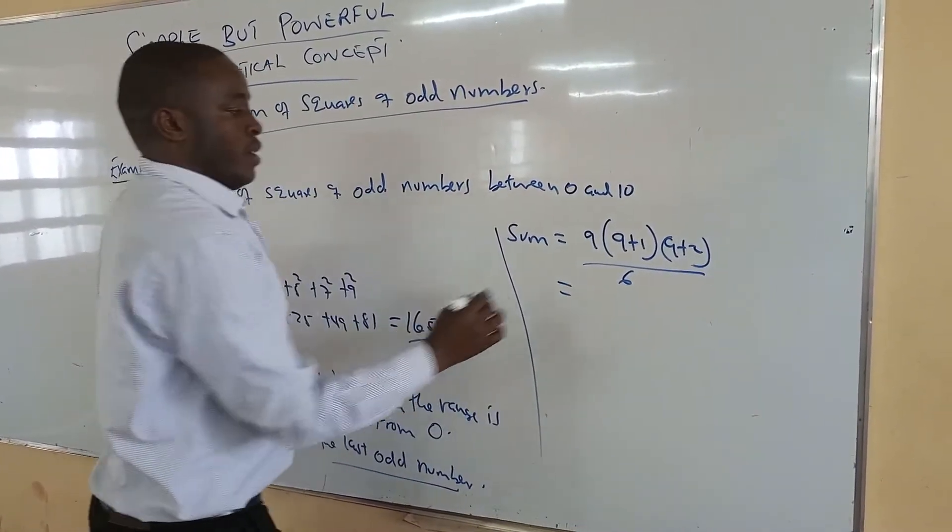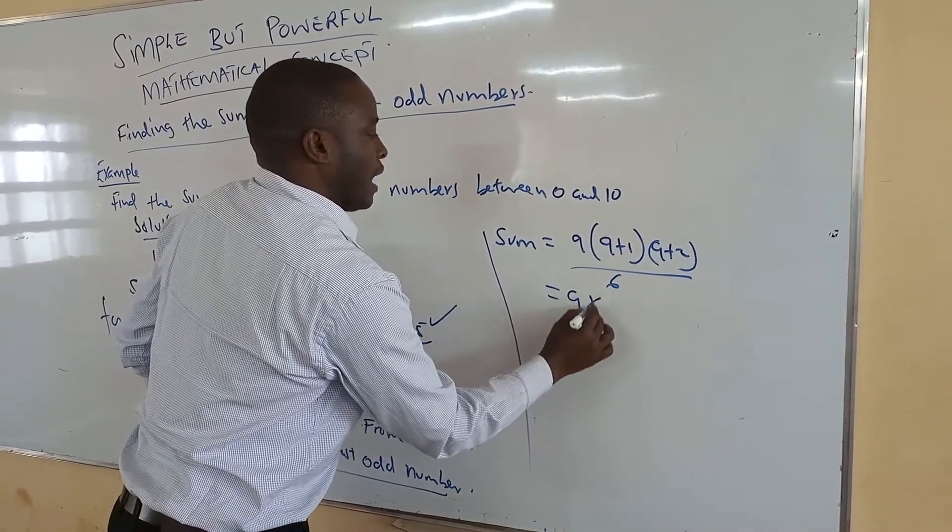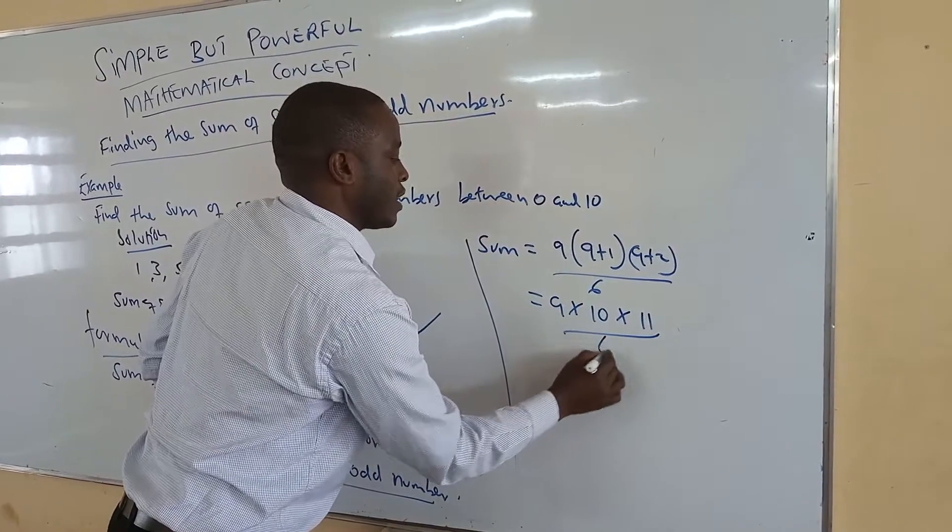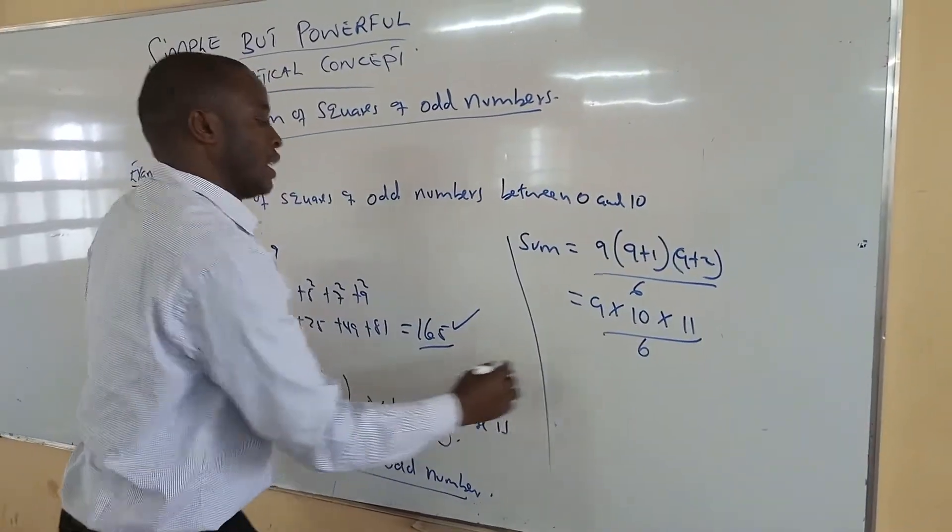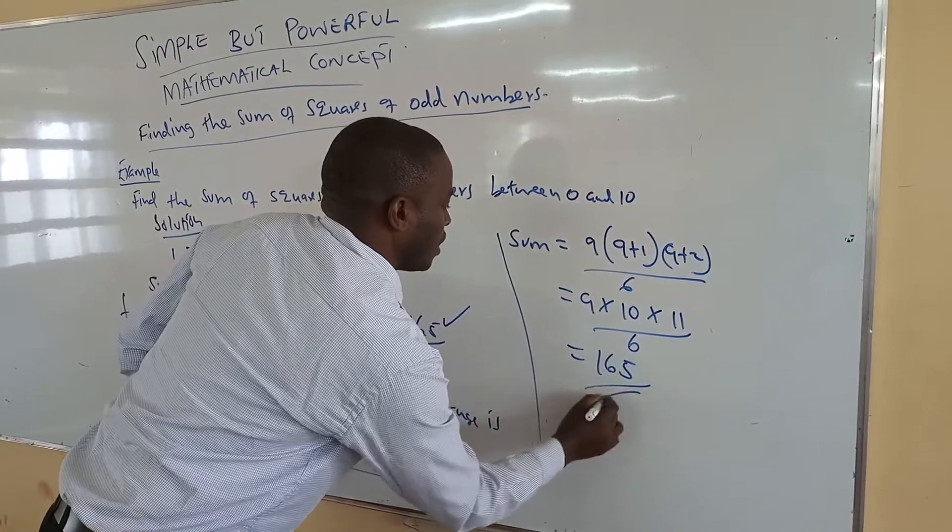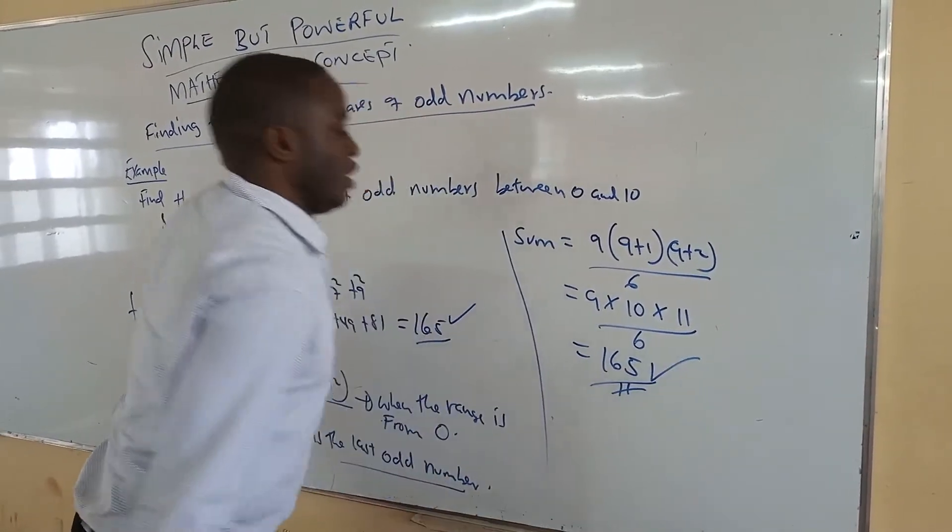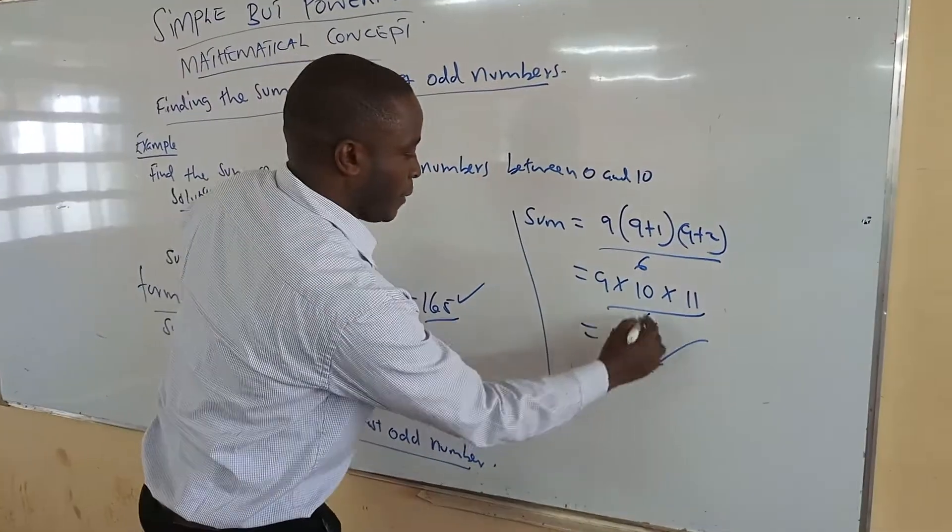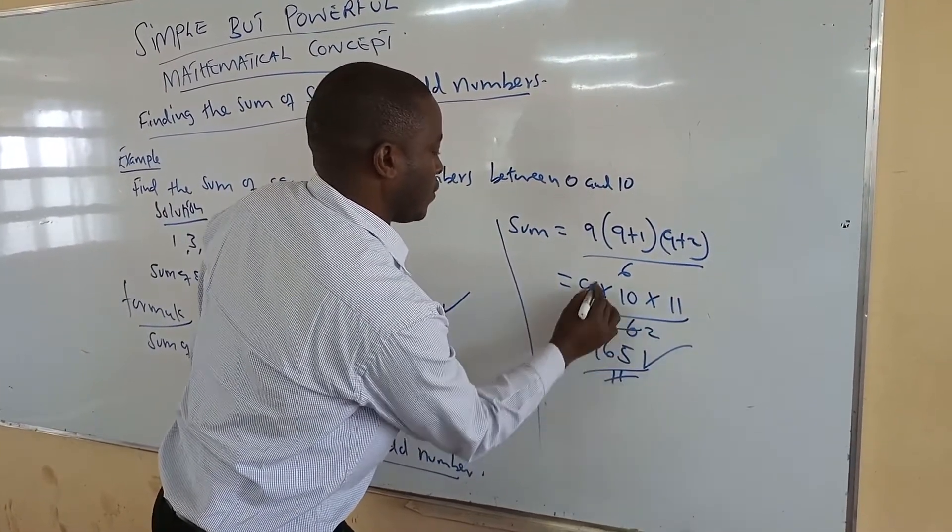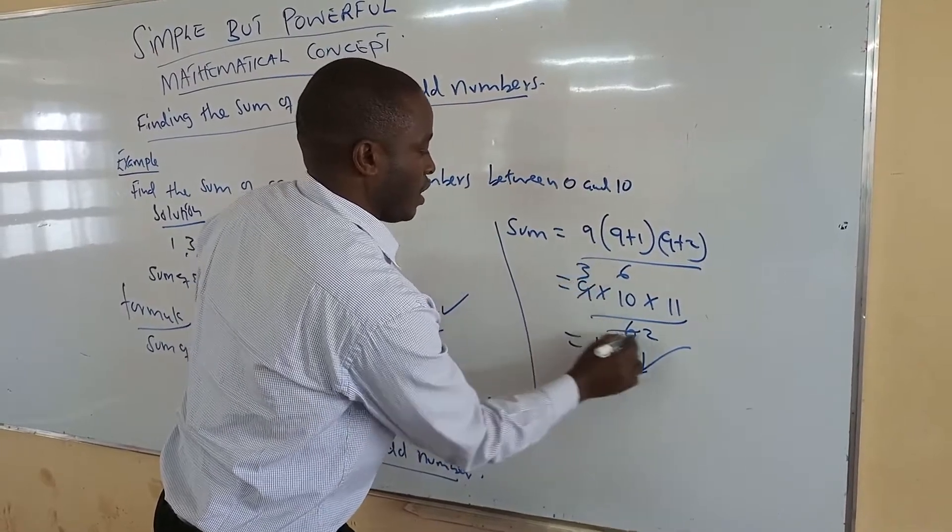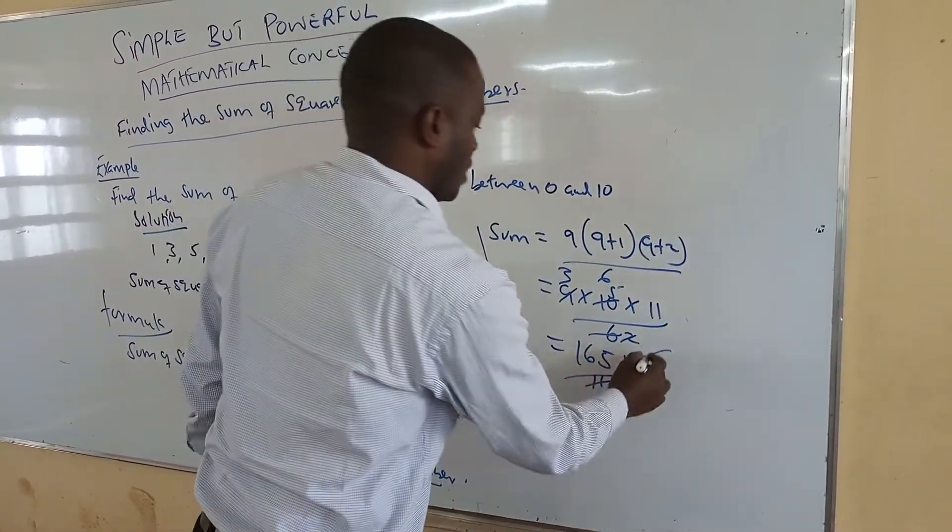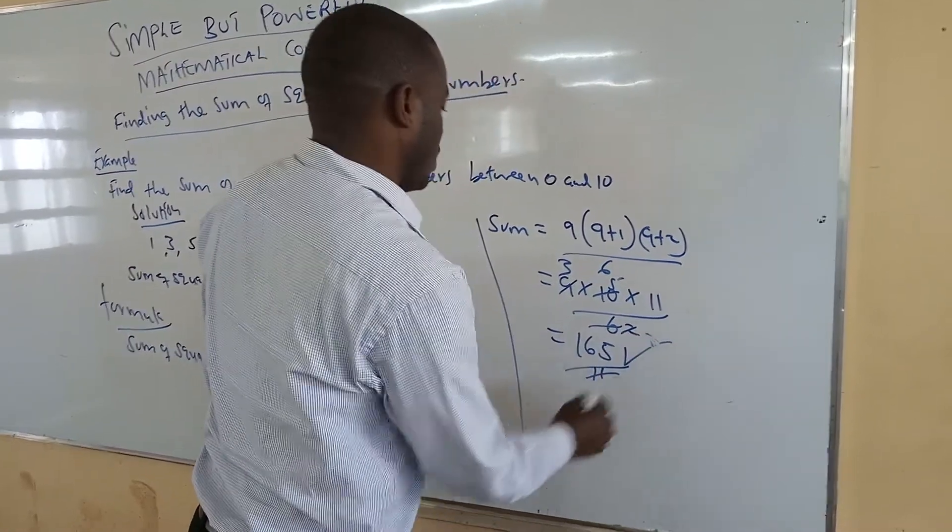This is equal to 9 times, this is 10 times 11, all over 6. If you multiply that and divide by 6, it gives you 165. 55 times 3 is 165.